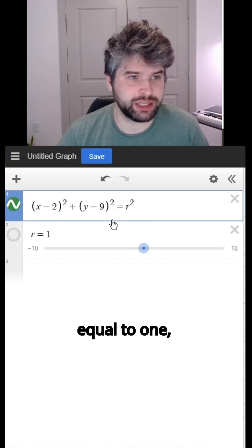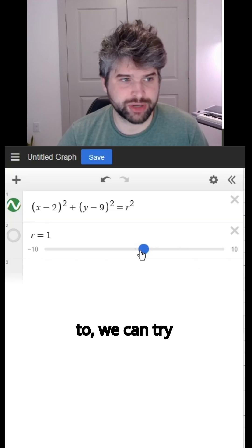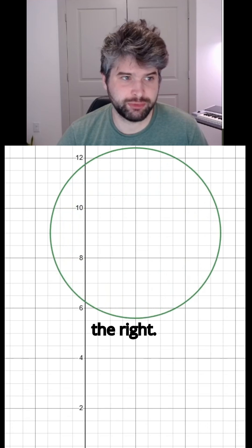Now it's setting r equal to one and it's graphing a circle with radius one. And if we want to, we can try different values of r by modifying this slider. And it makes the circle bigger when we drag the slider to the right.